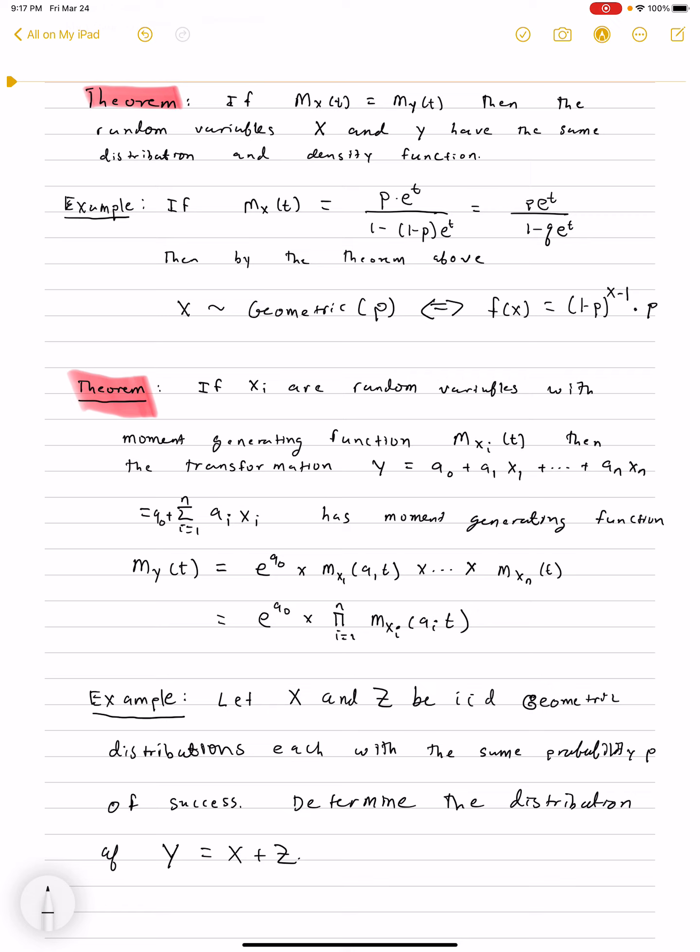Here we're going to consider the transformation where X and Z are geometric distributions, each with the same probability p of success, and our goal is to determine the distribution of Y equals X plus Z. This is an illustration of the second theorem where you only have two random variables, X_1 being X and X_2 being Z, a_0 being 0, a_1 and a_2 being 1.